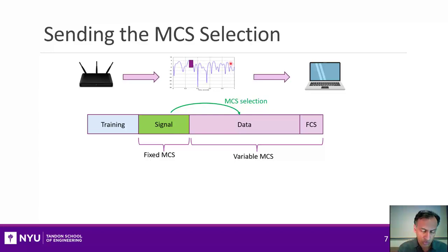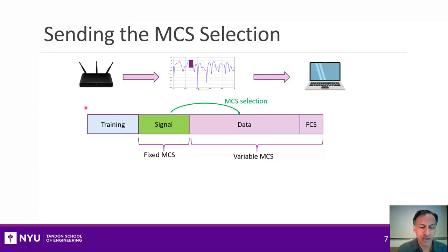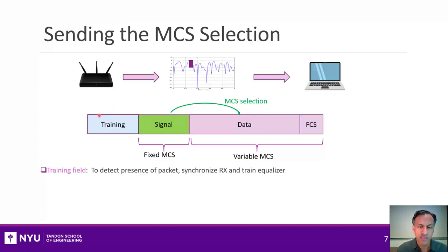Before we get to MCS selection, let's look at how, after the access point makes a decision about what MCS it has chosen, it actually sends that information to the receiver. Remember that 802.11 systems transmit data in packets, and each one of these packets has several different fields. The first field is called a training field, used to detect the presence of the packet and to train and synchronize the equalizer. The receiver constantly searches for the packet, detects its beginning, gets a coarse timing offset, sets its AGC, and synchronizes.